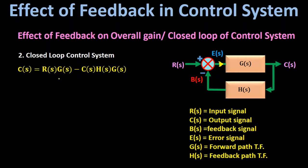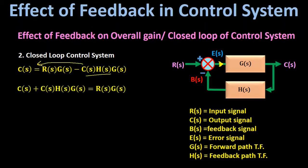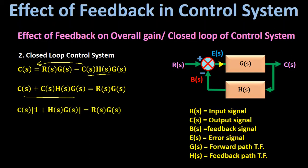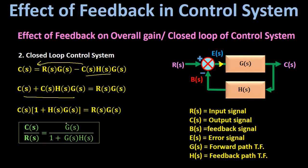Multiplying G(s) into the bracket gives C(s) = R(s)·G(s) − C(s)·H(s)·G(s). Moving the second term to the left-hand side: C(s) + C(s)·H(s)·G(s) = R(s)·G(s). Taking C(s) common: C(s) × [1 + G(s)·H(s)] = R(s)·G(s). Therefore the overall transfer function C(s)/R(s) = G(s) / [1 + G(s)·H(s)], which is the closed loop gain of the negative feedback control system.